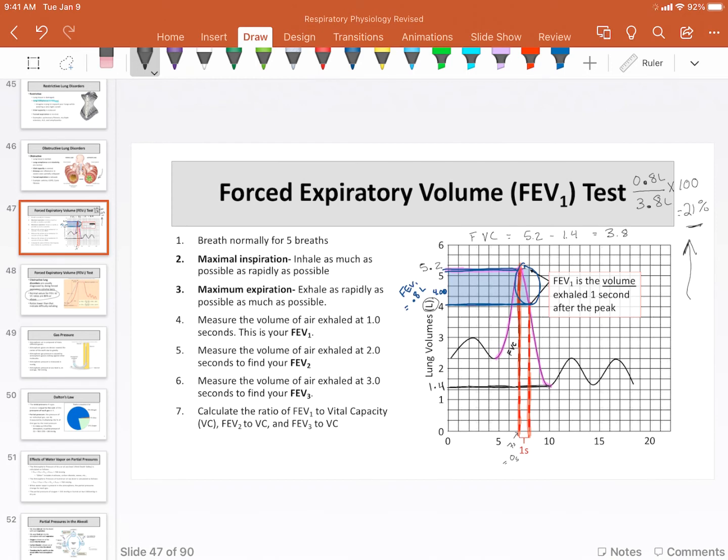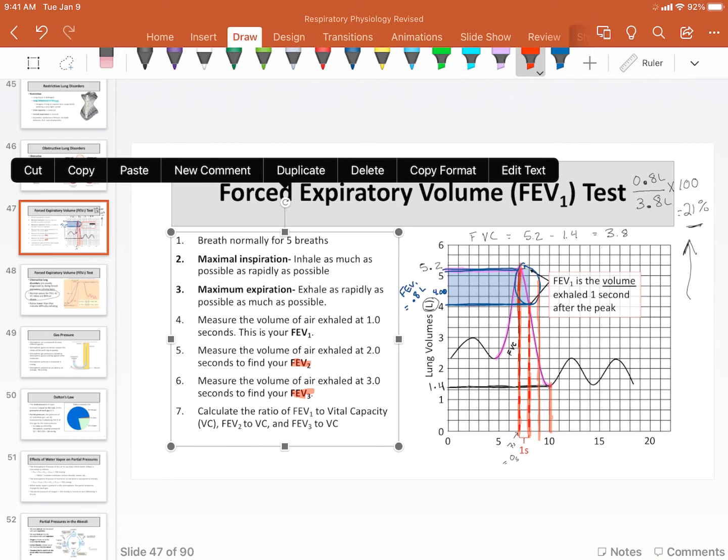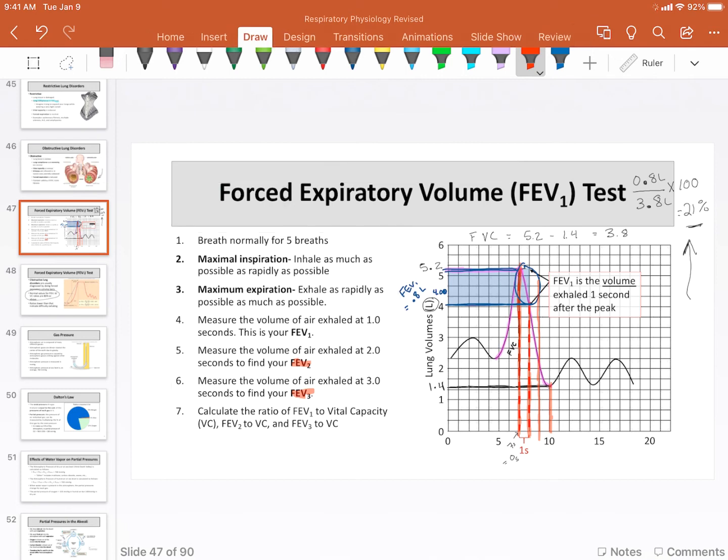Now you can further measure the forced expiratory volume at 2 seconds after the peak and that would be my FEV₂, and you can measure it by 3 seconds after the peak and that would be my FEV₃. And these values further tell you a little about lung function. By the time you reach your FEV₃ you really should have exhaled close to 100% of your vital capacity, somewhere in the range of 90 to 100%.